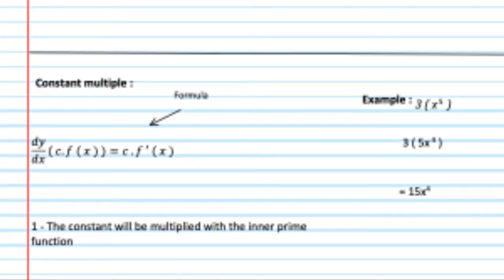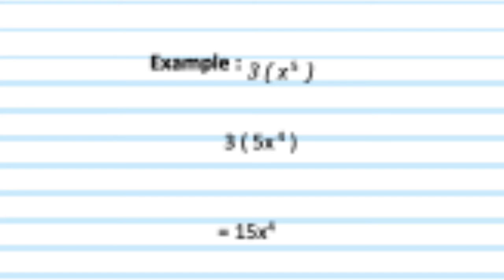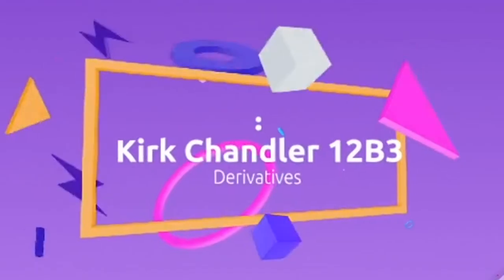Constant multiple, on the other hand, is a bit different, where a constant with a function will be multiplied with the prime, and it's written there in the formula. So, in this case, we'll take the example 3 times x to the 5. And then, to do this, we'll have to move down the superscript 5 down, and subtract it, so it would be 5x to the 4. Then, the two constants outside, would multiply them into 15. The superscript stays the same, so it would be 15x to the 4.